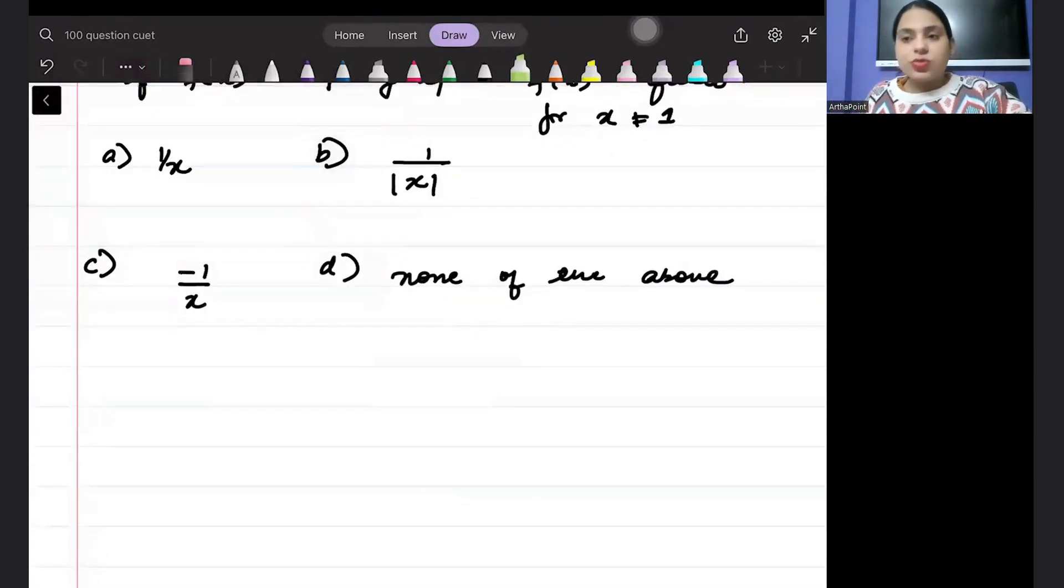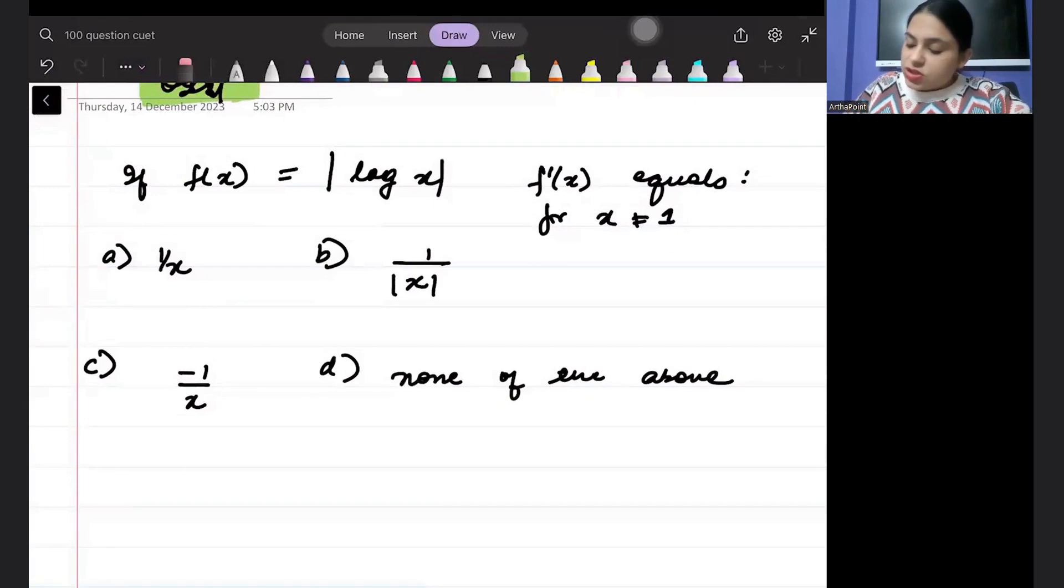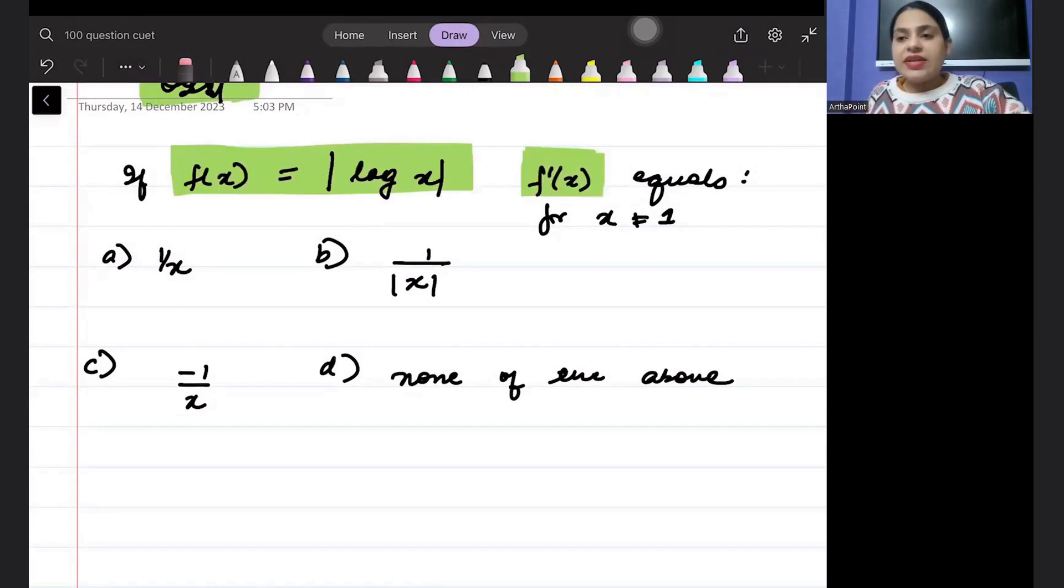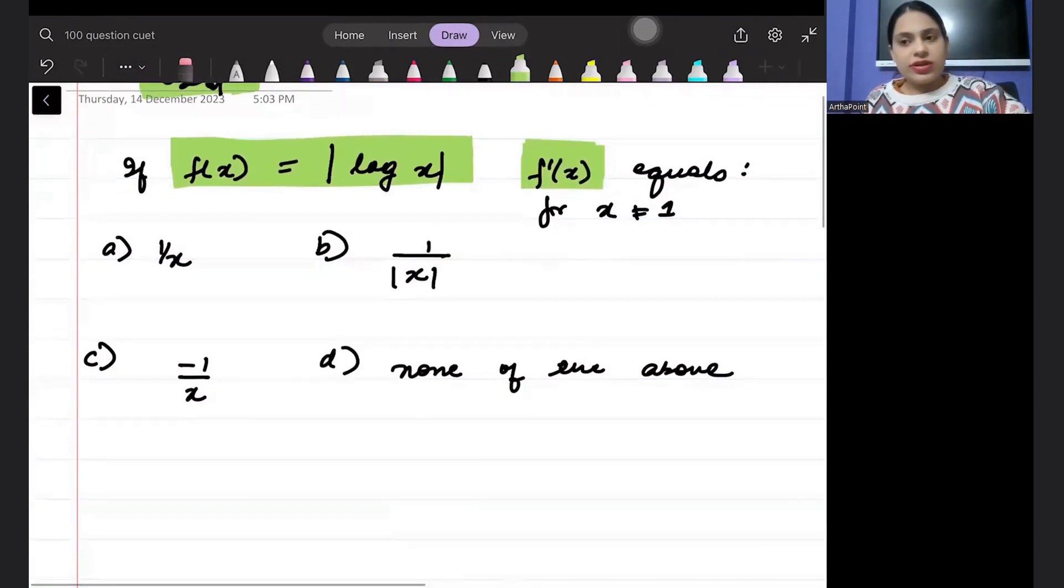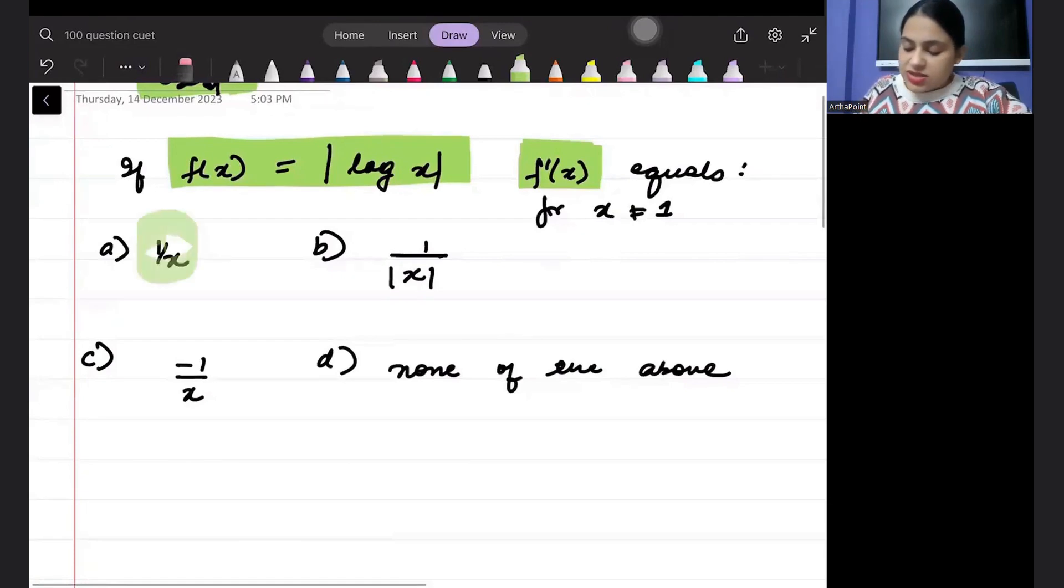So let me just read the question. The function is given as |log x| and you need to find out f'(x). I can guarantee that most of you will do this question incorrectly and mark the answer as a. It is incorrect.